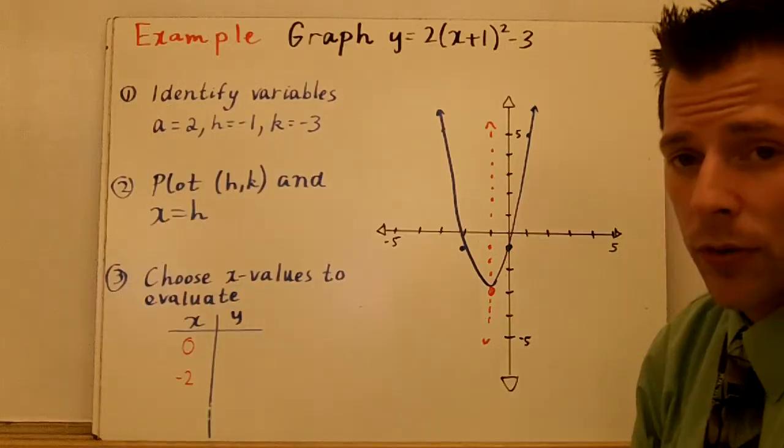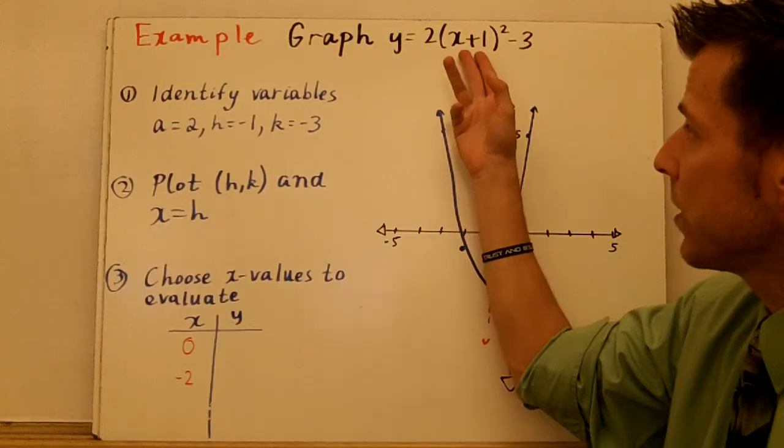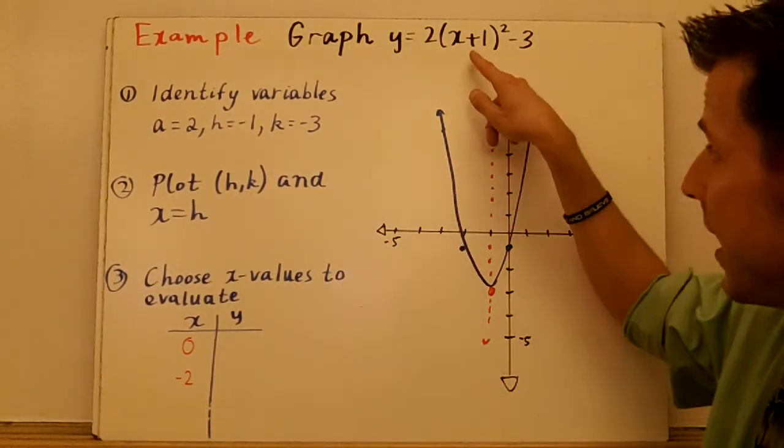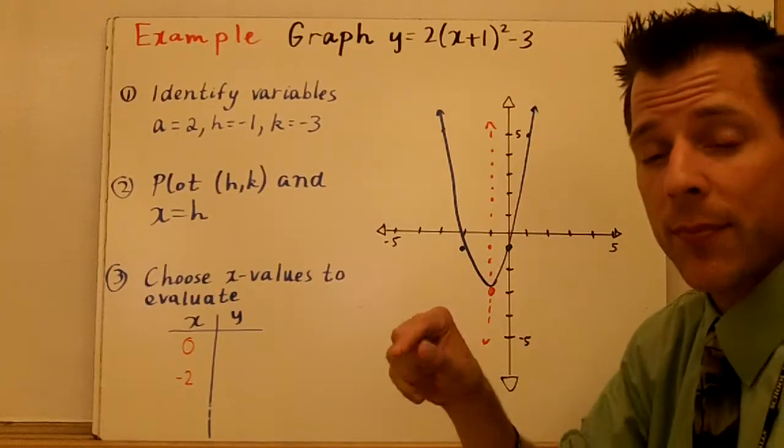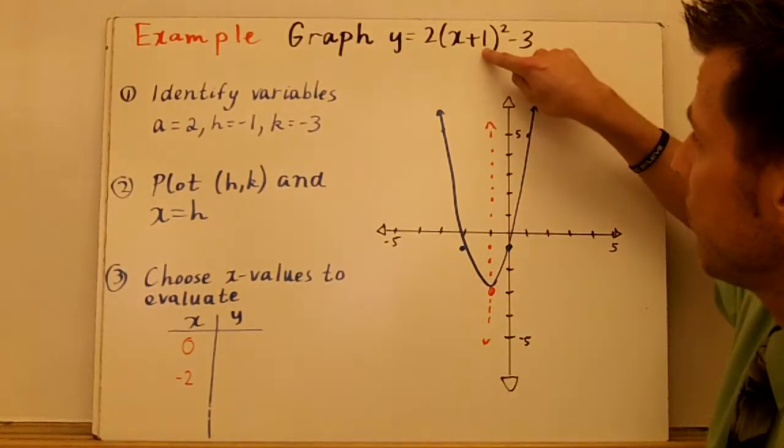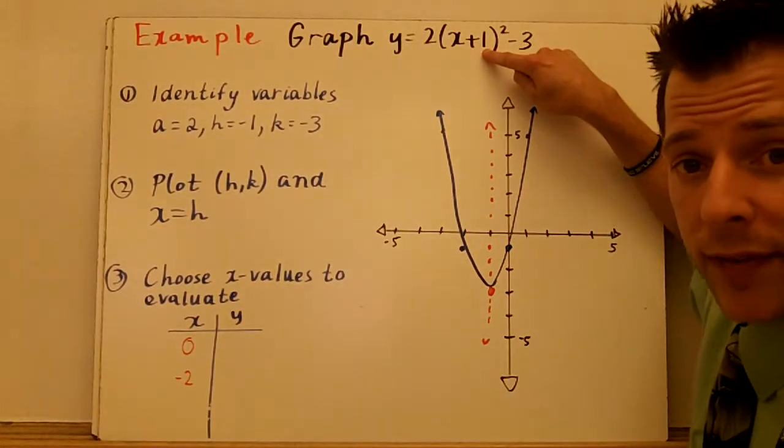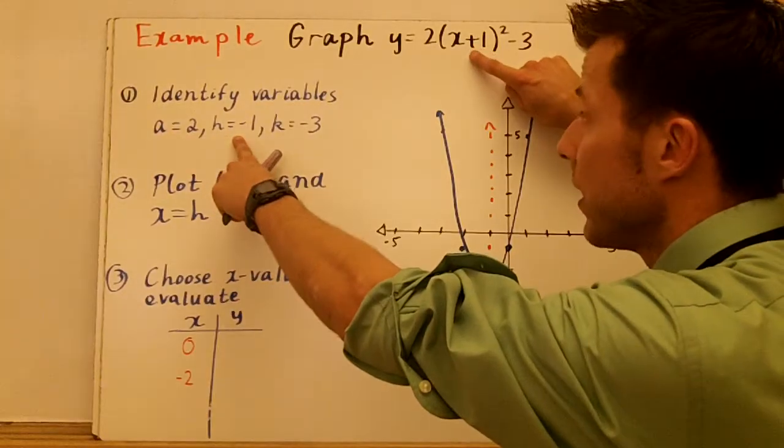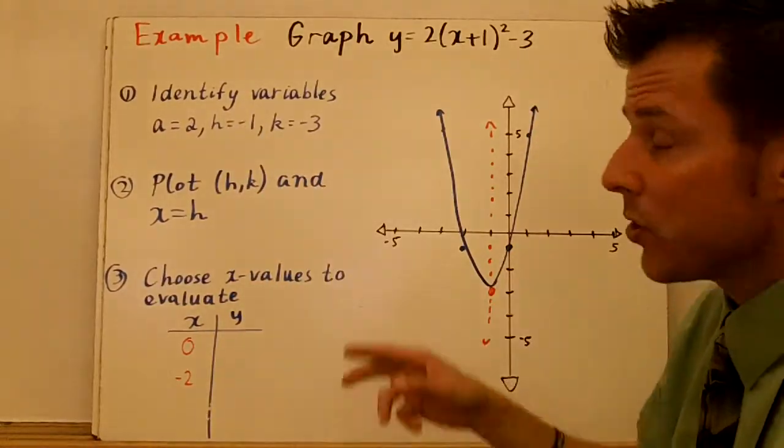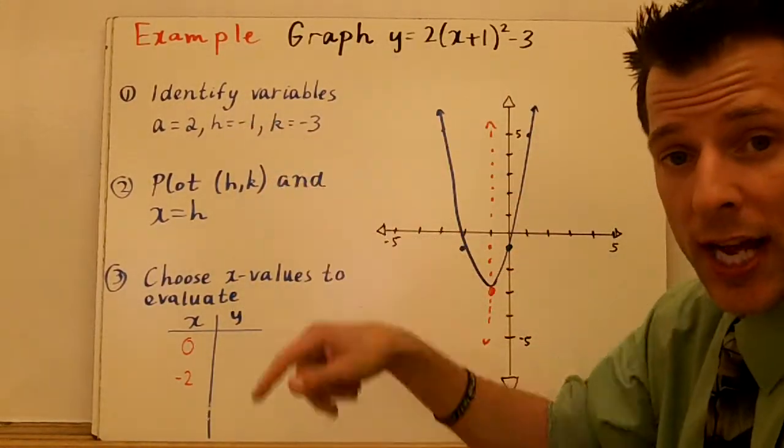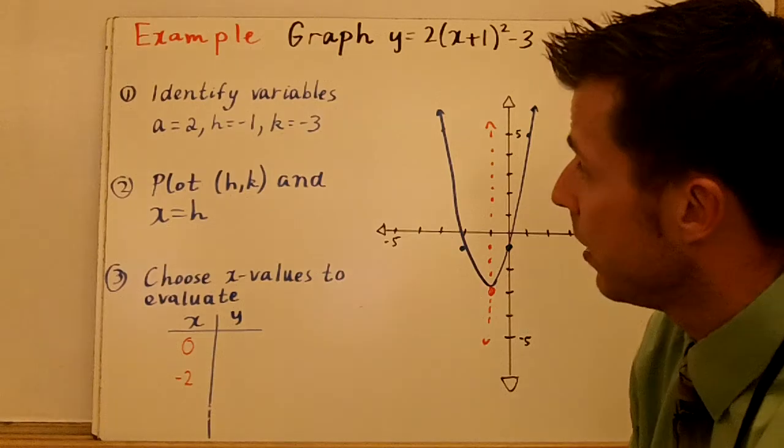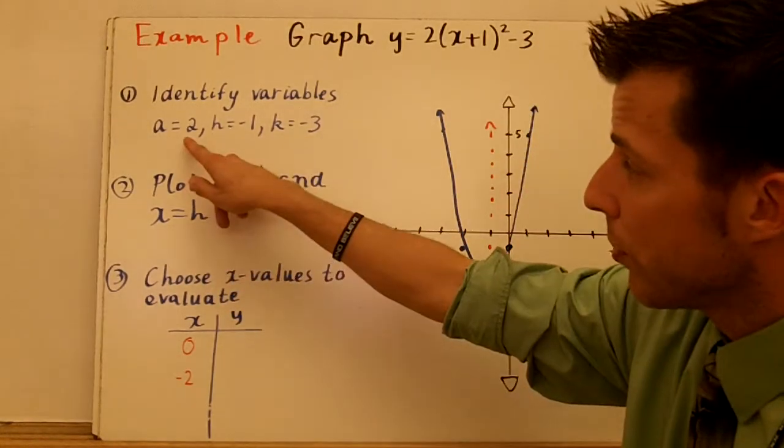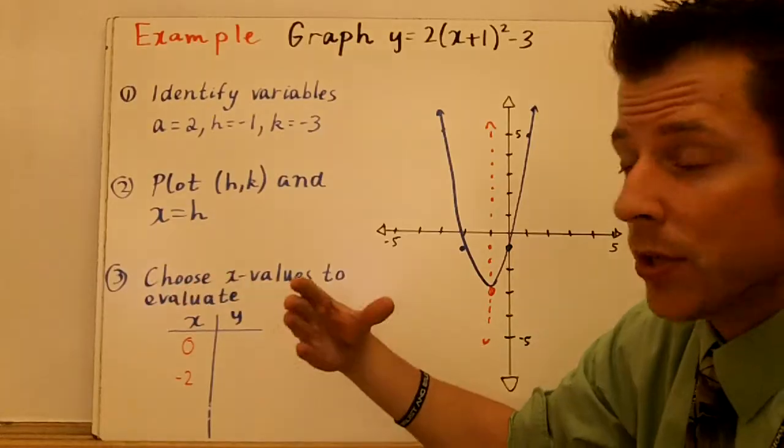Alright, so now we're going to graph y equals 2 times the quantity x plus 1 squared minus 3. And I'm really focusing on this h value here, making these two examples plus. Because notice how you have plus here, and when I identify my variables, I have minus 1 right here. So look, sign is positive, h is negative. They're opposites. Whatever that operation is, make h the opposite. You'll never go wrong. A is 2, k is negative 3. So the parabola is going to open up. It's going to be more narrow.